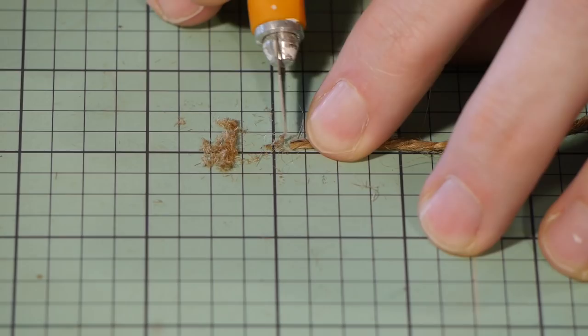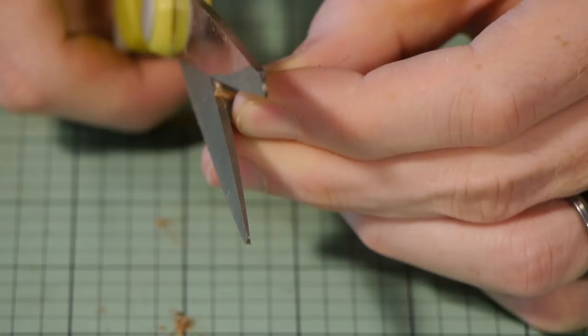Now for the tedious part, dicing up the twine. This is one way to do it using a hobby knife, or you can also use scissors. But my preferred method, which is also the fastest, is to use a chopper.